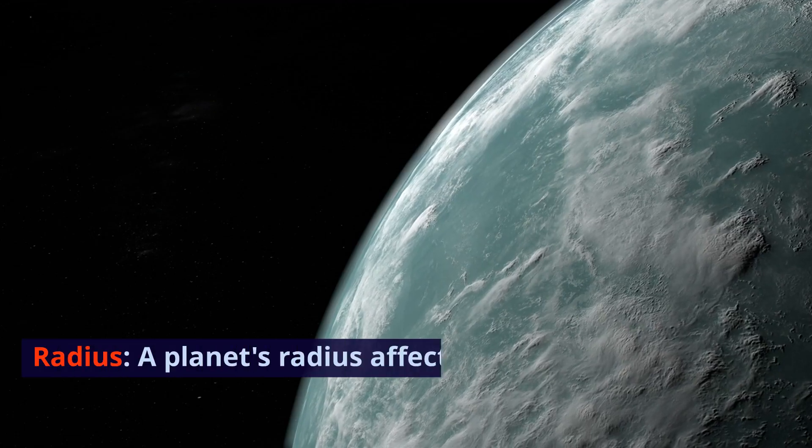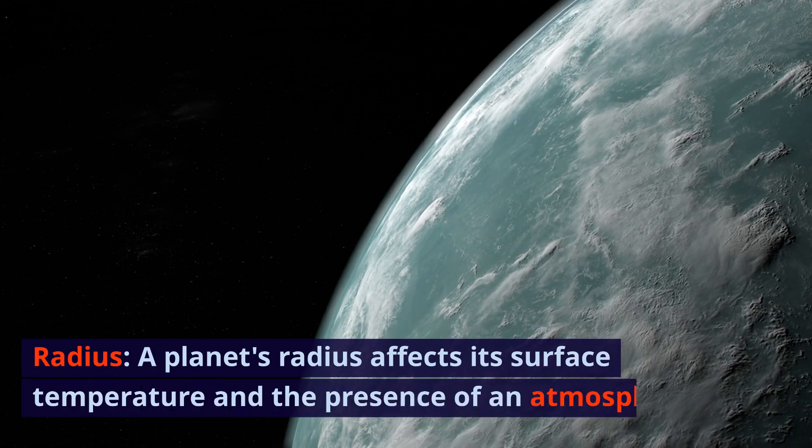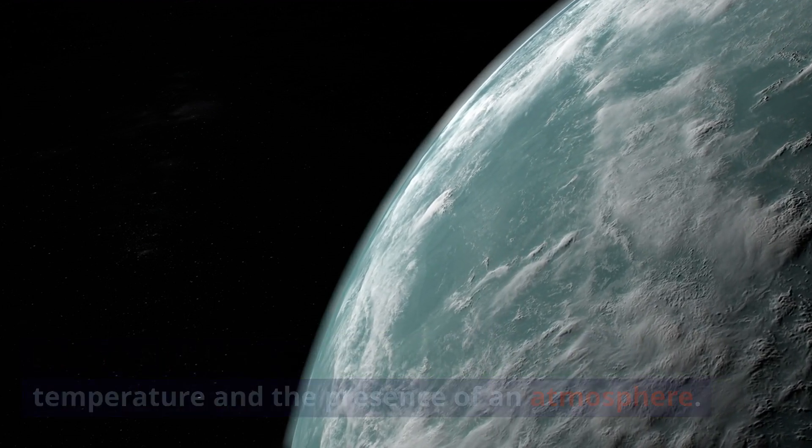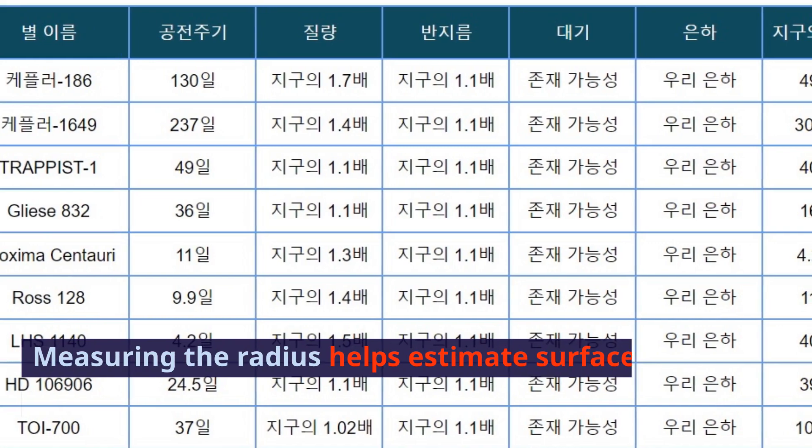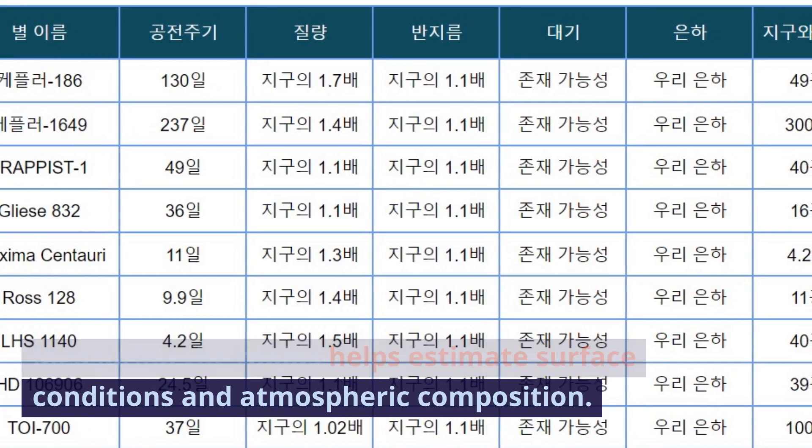Third, radius: a planet's radius affects its surface temperature and the presence of an atmosphere. Measuring the radius helps estimate surface conditions and atmospheric composition.